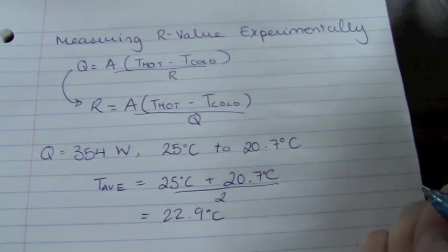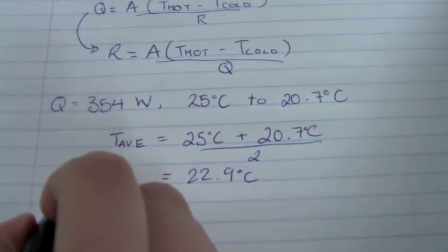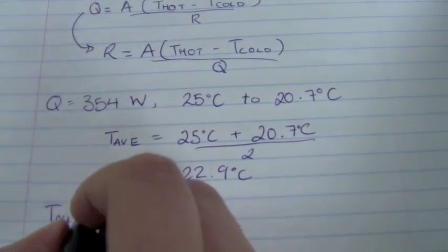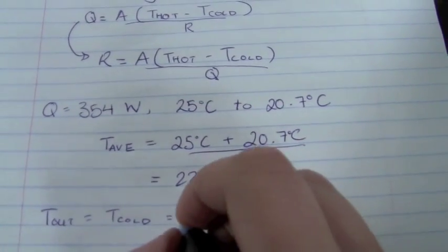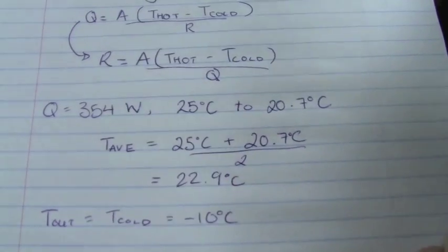Our T outside is also known as our T-cold. Let's suppose that this value is minus 10 degrees Celsius, so we're going to be in the winter.